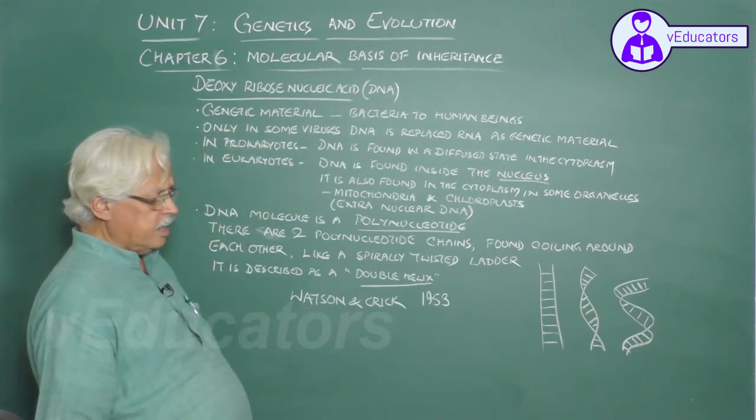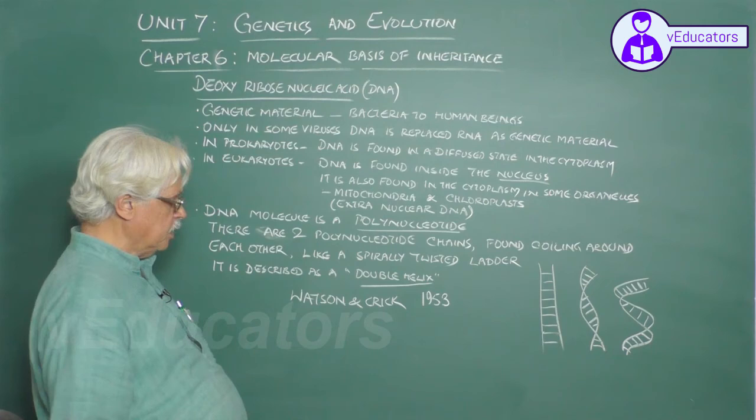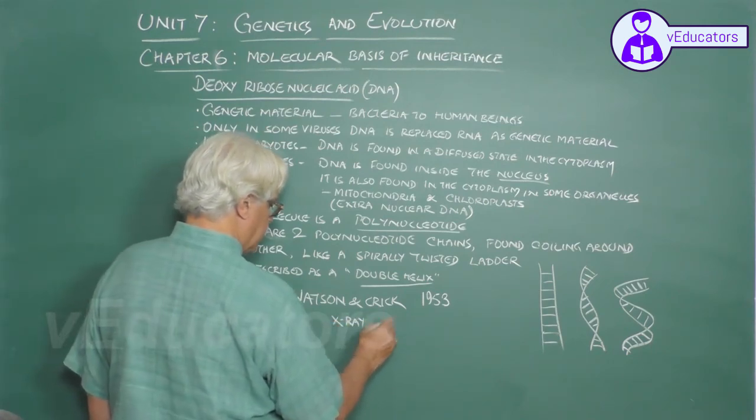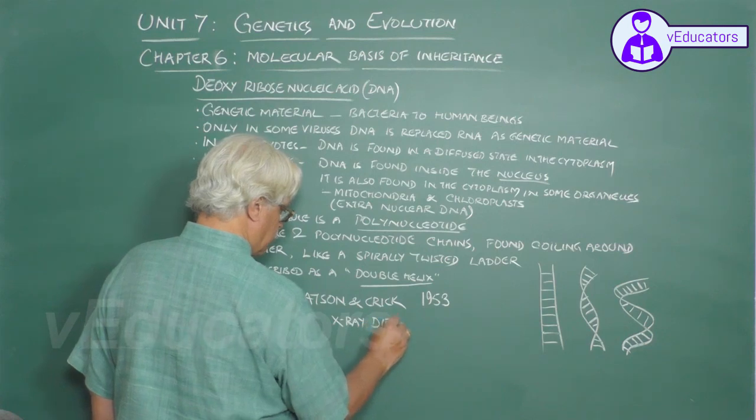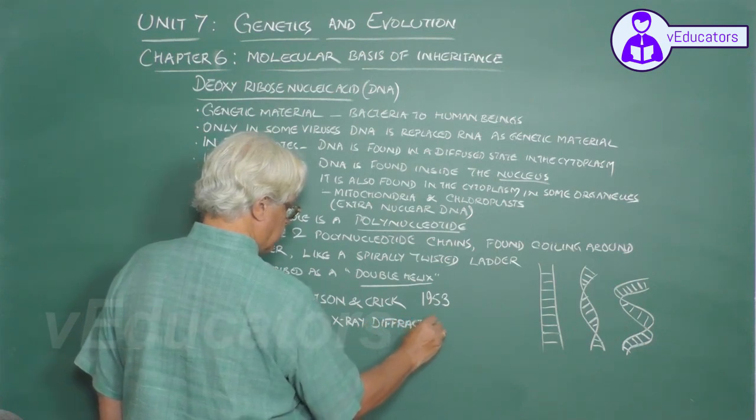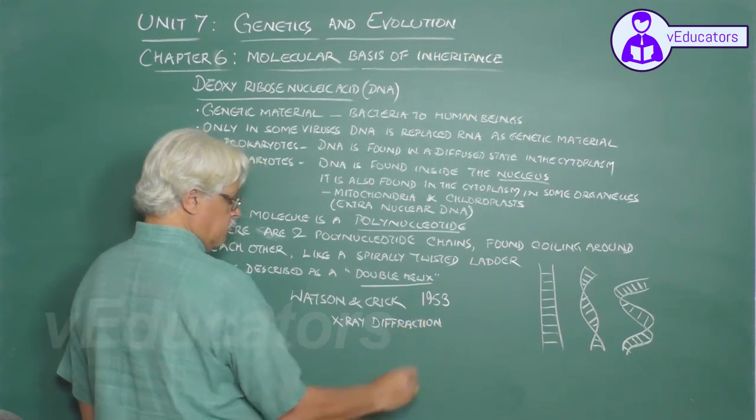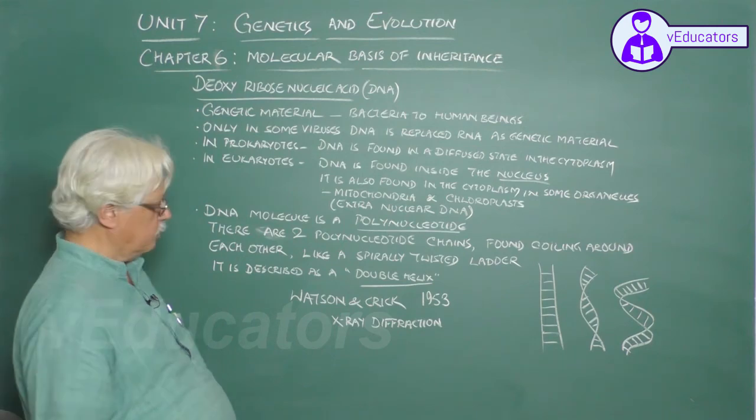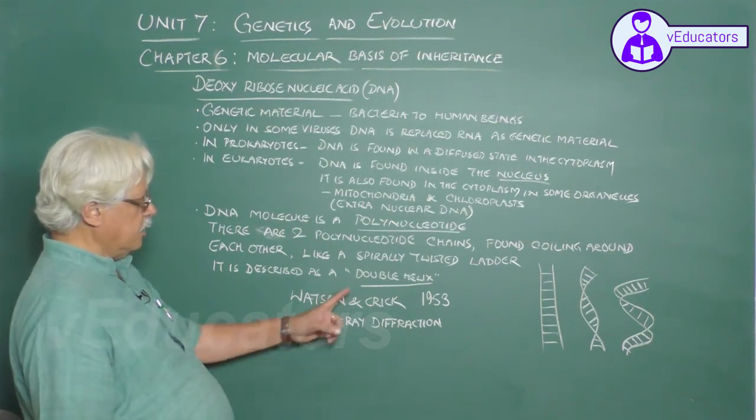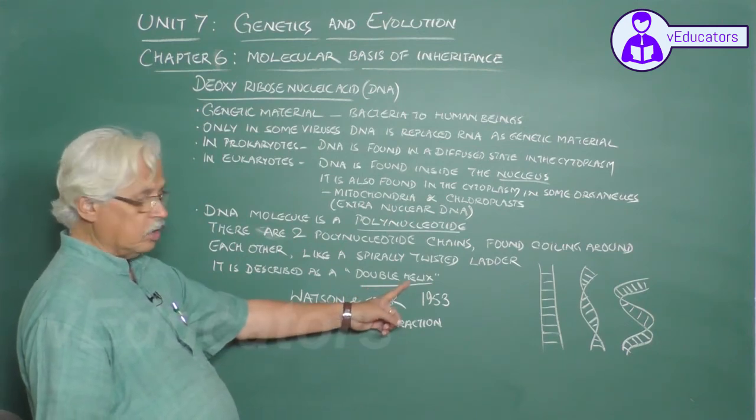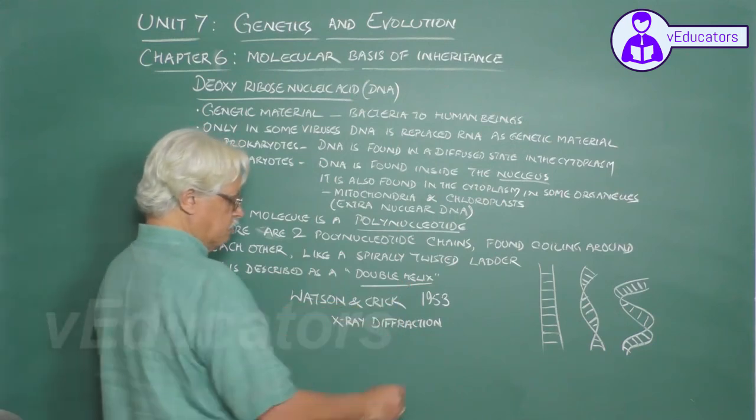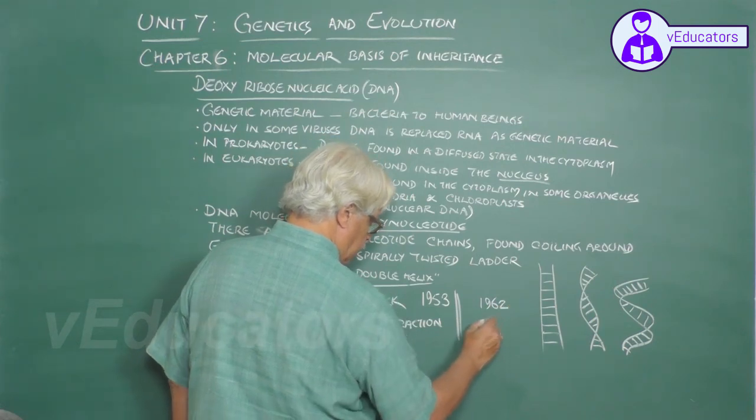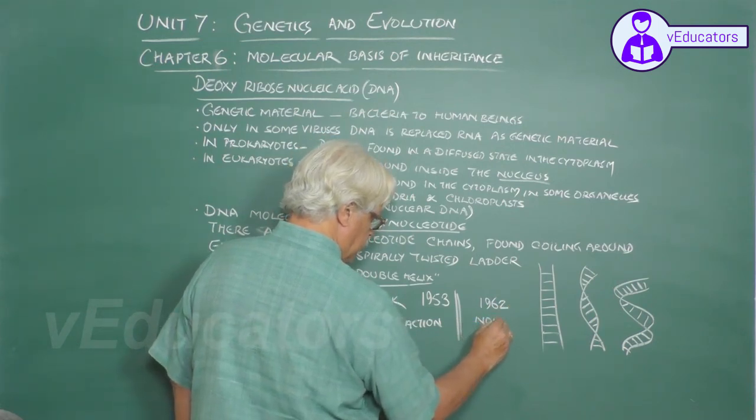They conducted a detailed investigation on the structure of the DNA molecule, used several important modern techniques like X-ray diffraction, and finally they were able to arrive at the structure of the DNA molecule. They described it as the double helix model, and for this important contribution they were awarded a Nobel Prize in the year 1962.